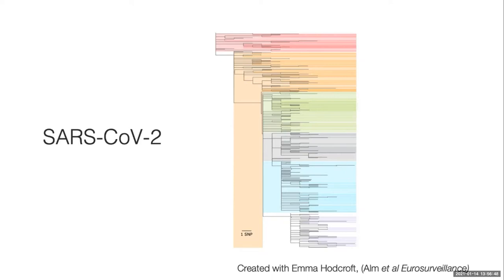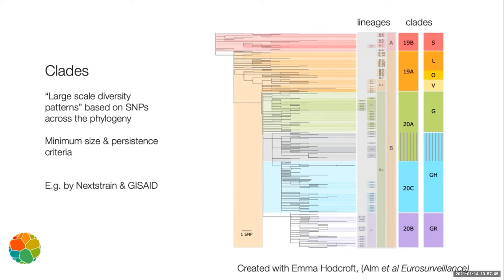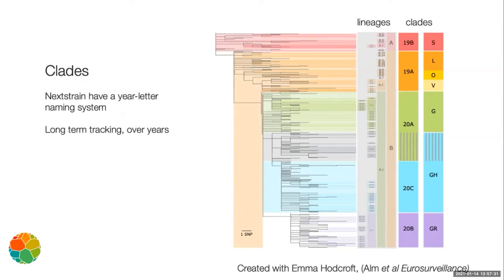For SARS-CoV-2 there are currently two different resolutions of groupings: clades and lineages. Clades — including Nextstrain clades and GISAID clades — split the current tree into large-scale diversity patterns based on SNPs across the phylogeny. There are criteria like minimum size and minimum persistence before a clade is designated, making them suitable for long-term tracking over years and looking at trends. You'll be very familiar with the Nextstrain year-letter naming system.